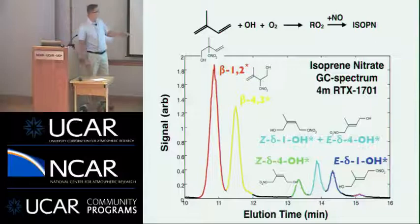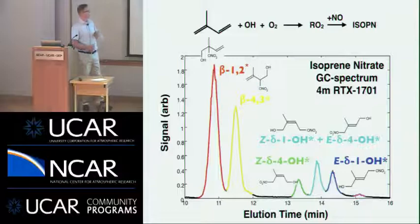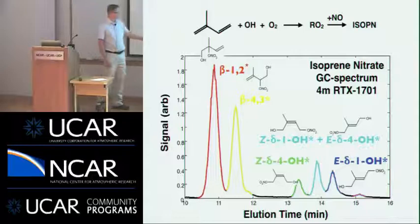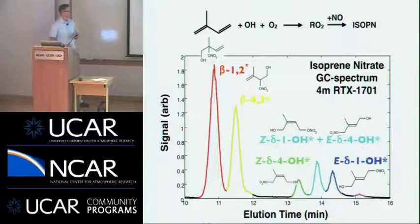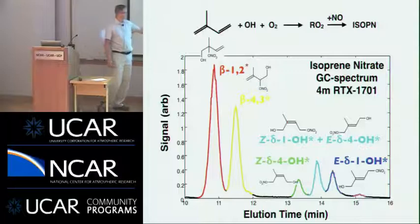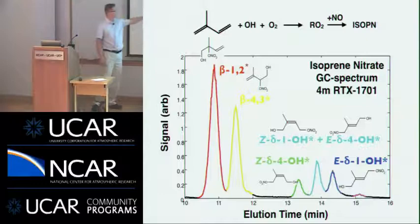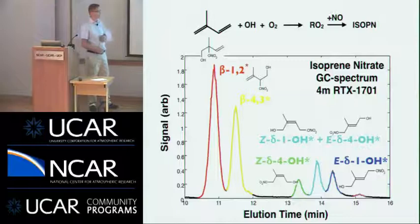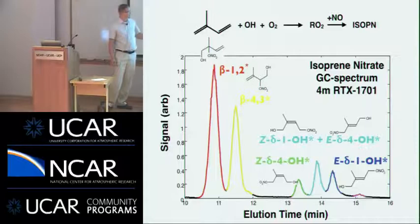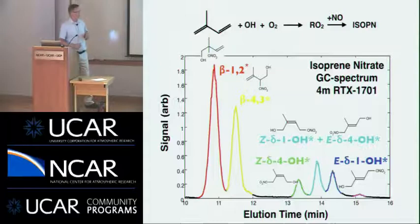Here's an example spectrum at mass-to-charge ratio 232, which is the cluster of CF3O minus with the isoprene hydroxynitrates made in the first generation. We see a spectrum with five fairly nice peaks. Through laboratory work involving synthesis, we've been able to make all of these standards, assign these peaks to particular standards, and also calibrate the GC peaks so we know the sensitivity for the instrument. It turns out that the CF3O minus ion reacts with all of these different isomers at basically the same rate, which makes the analysis easy.